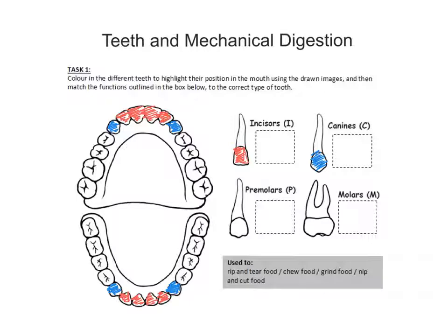Our premolars — I'll do these in green — are the two next to the canines. A typical adult has between 14 and 16 teeth in the upper and lower jaw combined.